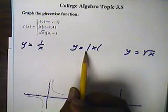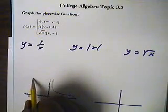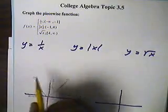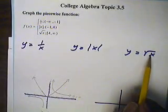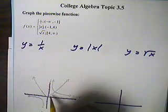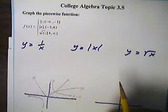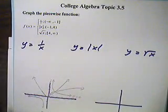This graph right here, the absolute value, will be a V shape. So it will go from here to here, and then back up again. And then finally, the square root of x, that shape looks like this. So those are our three graphs.